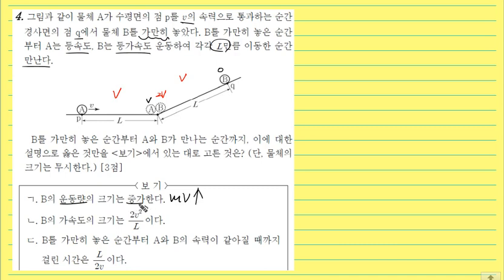B의 가속도를 물어봤어요. 그러면 B는 처음에 0이었지만 나중에 2V라는 속도가 됐죠? 그래서 2V라는 속도가 더해졌어요. 근데 이때 걸린 시간을 우리가 알아야 되겠죠? 속도가 얼마큼 증가했는지 얼마만큼 시간 동안, 그래야지만 가속도를 구할 수 있으니까요.